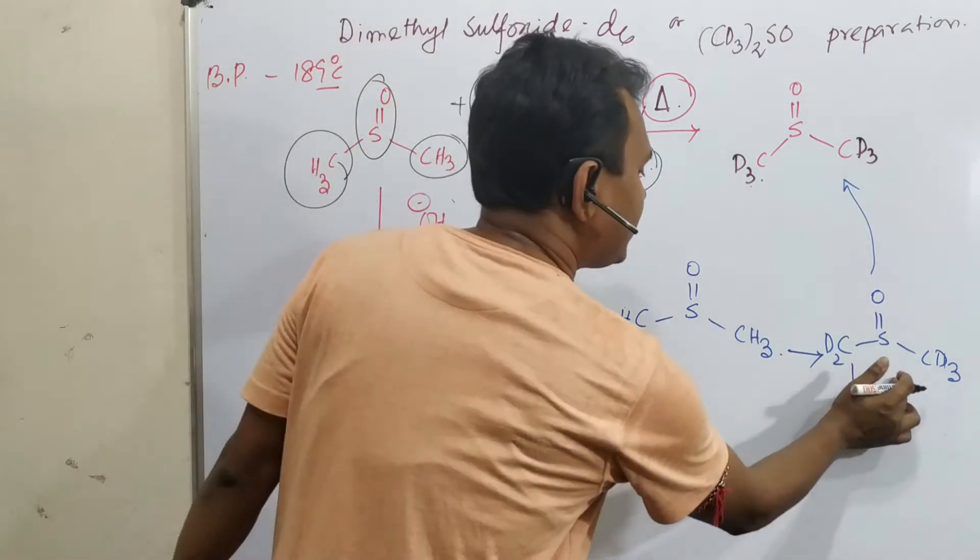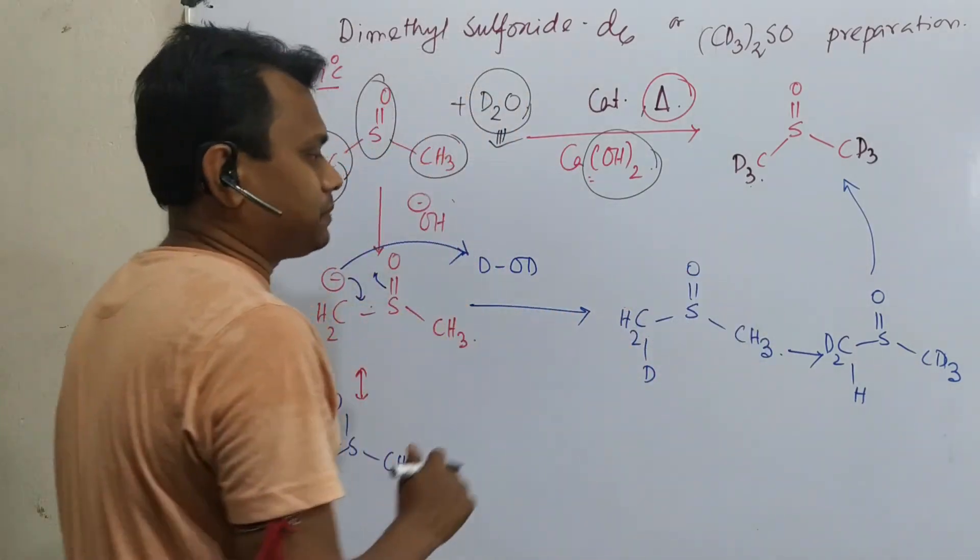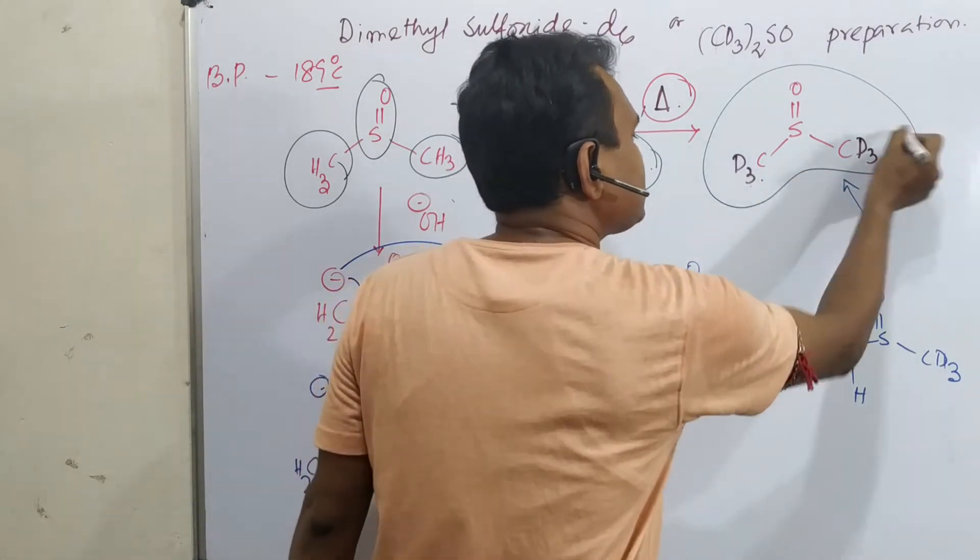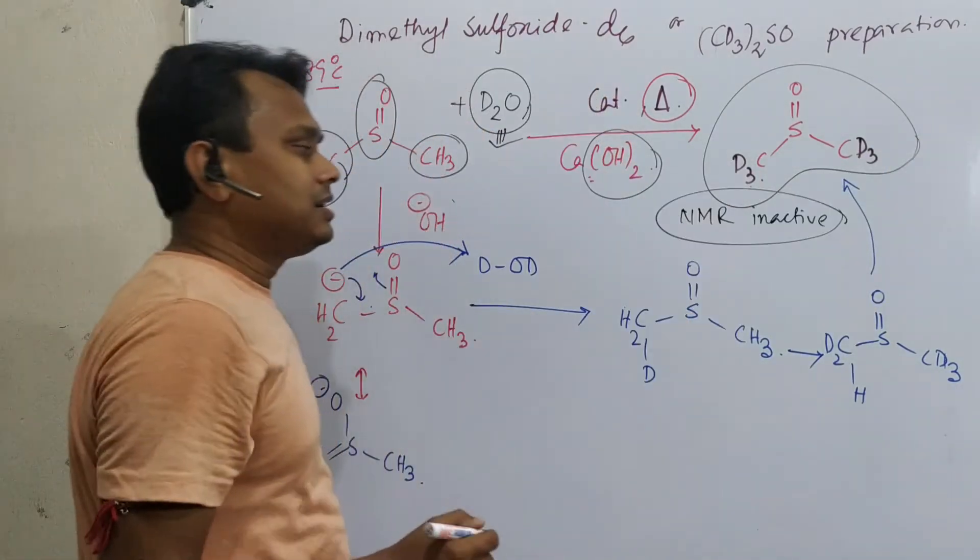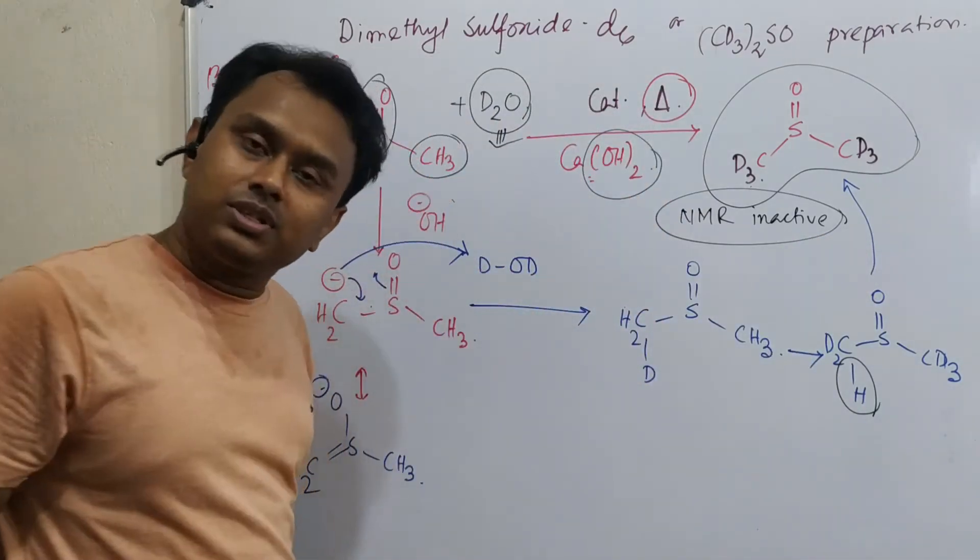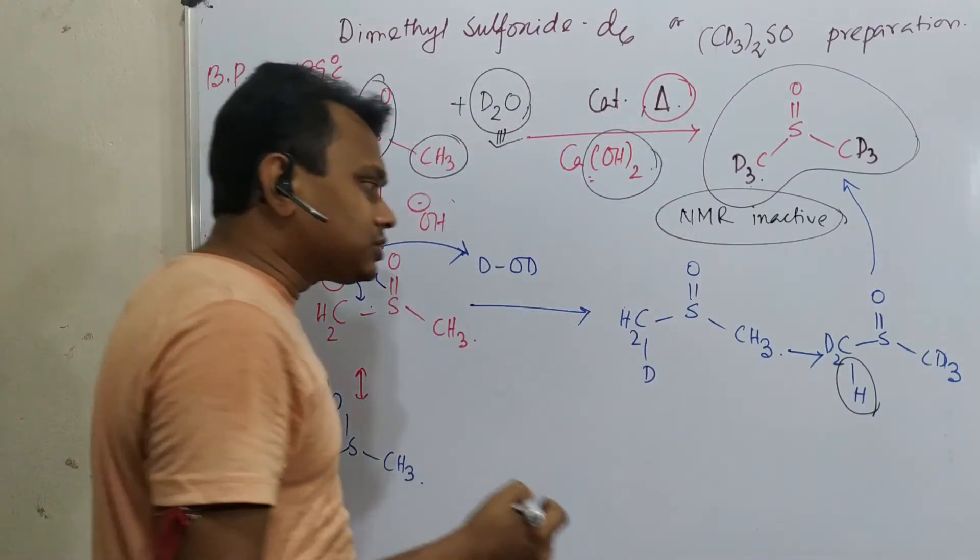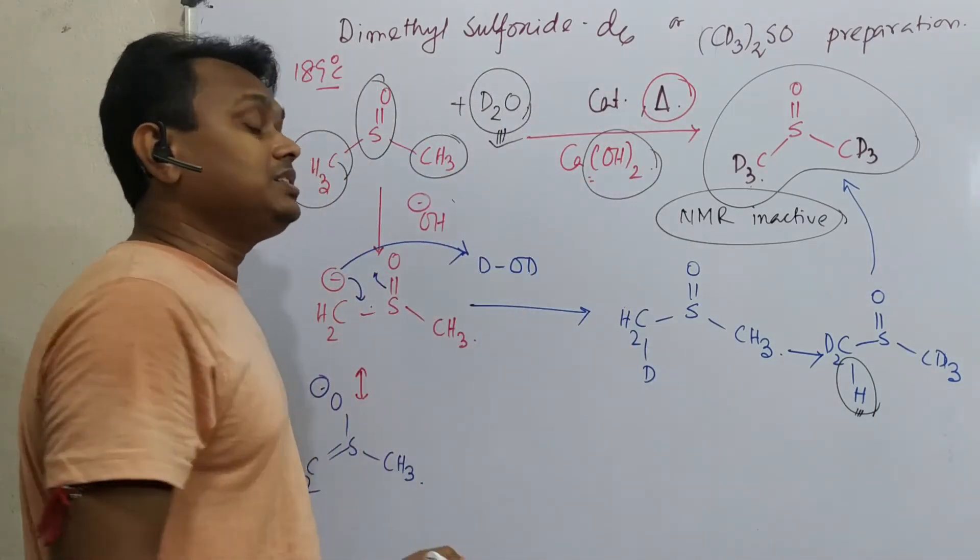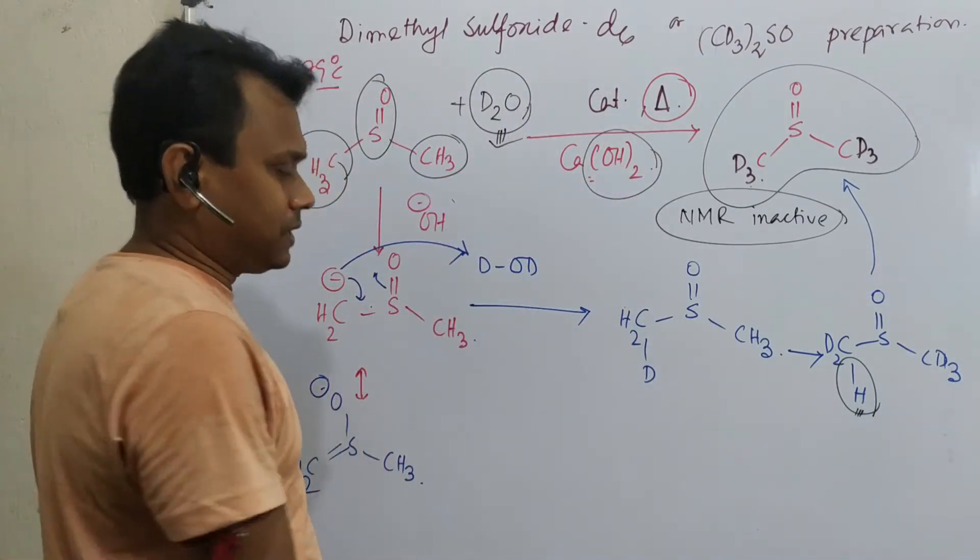So now what is the advantage of this in NMR spectroscopy? The advantage is that pure, this compound is NMR inactive, but this is NMR inactive because there is one hydrogen. So that's why we get a signal near about I guess 2.5, so that is the solvent peak for proton NMR spectroscopy.